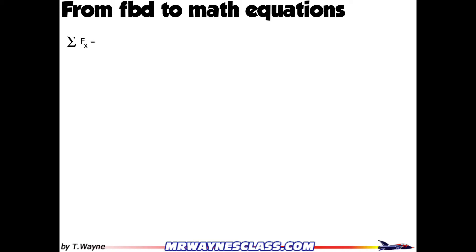In math terms, sigma — we're summing up the forces in a direction, and we're going to choose the x direction. I always put an F indicating I'm summing up the forces, and then I put the direction I'm summing them up in, which in this case is the x direction. And that's going to equal either the mass times acceleration, or it'll equal zero — one or the other.